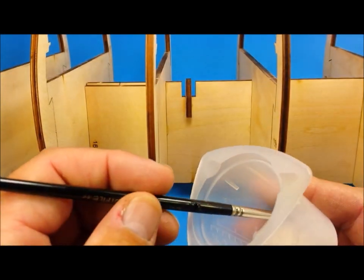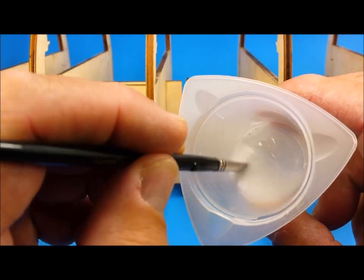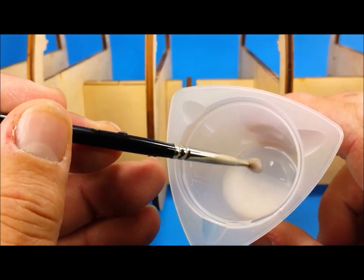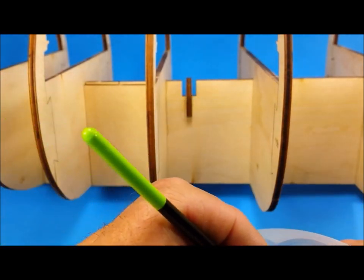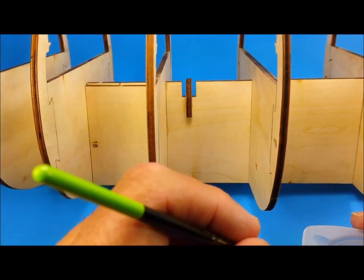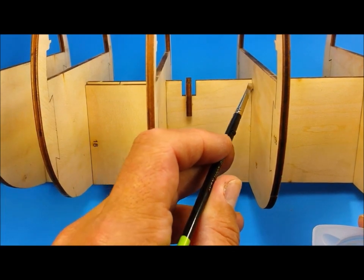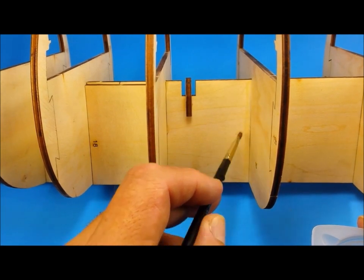Nearing the end of the construction of pack one, it was time to secure the bulkheads for permanent securement. I made a mix of standard PVA and water. This was applied to all the joints. The capillary action allows the glue to soak right into the joint.